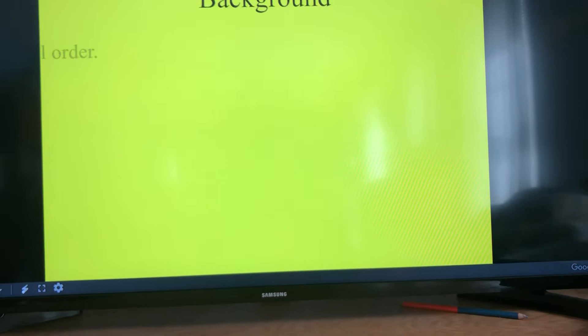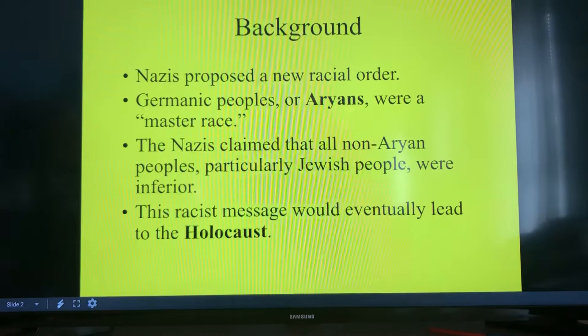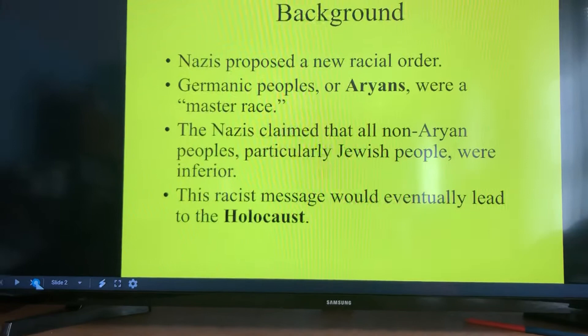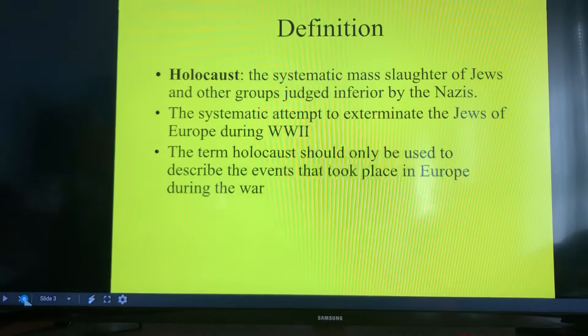We're on the Holocaust now. Remember that the background is that the Nazis built this new racial order. The Germanic people, or the Aryans, were considered a master race. Anyone that was not an Aryan, particularly the Jewish people, were considered inferior. This racist message eventually leads to the Holocaust. By definition, the Holocaust is a systematic mass slaughter of Jews and other groups judged inferior by the Nazis.